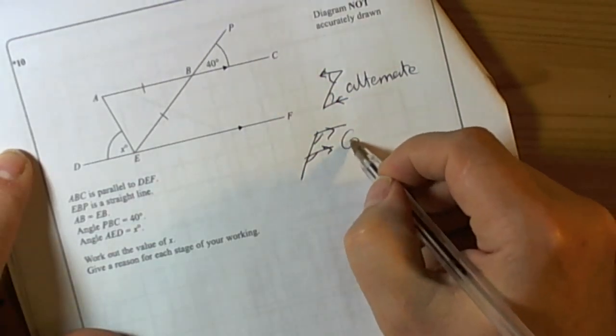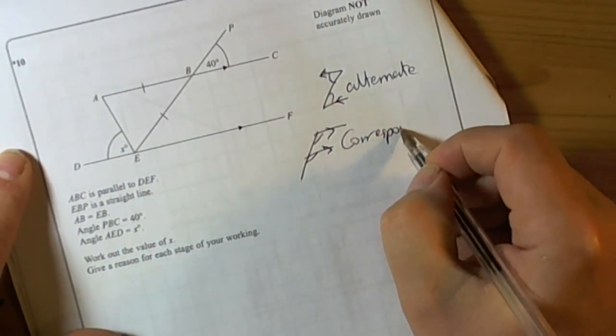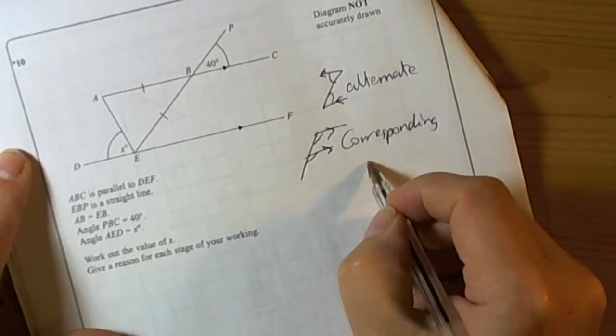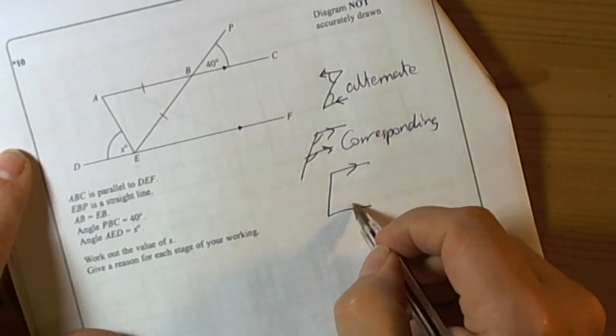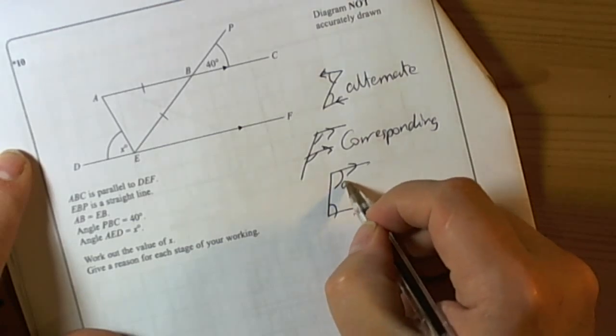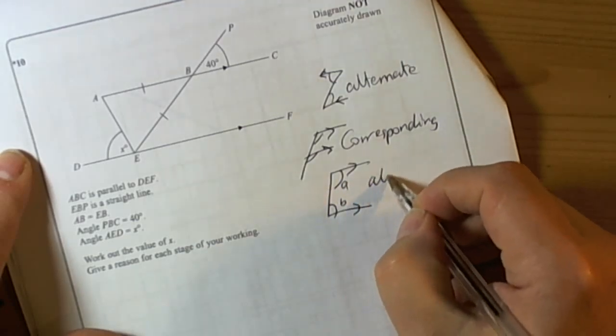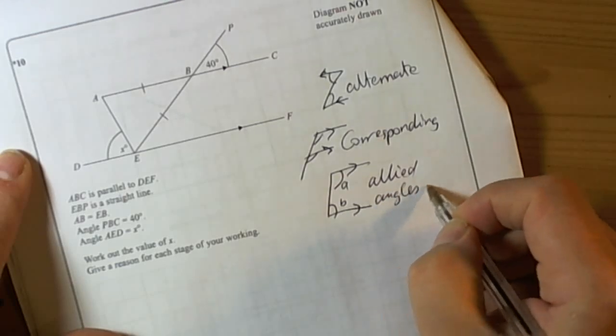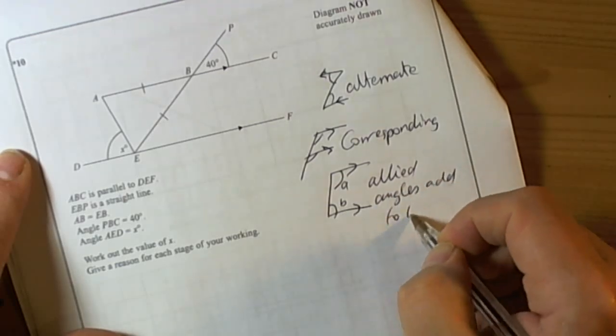So corresponding angles, or we could be using the allied angles add up to 180, or the co-interior angles add up to 180. So allied angles add up to 180 degrees.